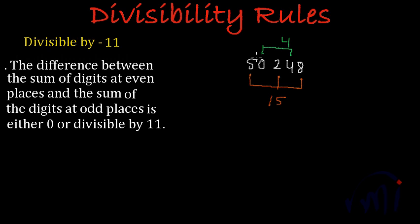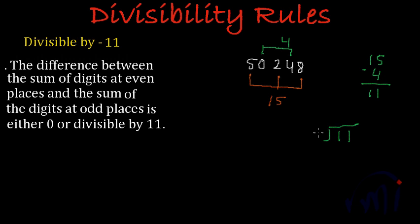Now we have to find the difference. We subtract the smaller number, which is 4, from the bigger number, which is 15. So 15 minus 4 gives us 11, and 11 is a multiple of 11 — 11 ones are 11 — giving remainder 0. This suggests that 50,248 will also be divisible by 11. Let's check the validity of the rule.